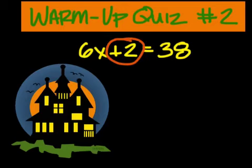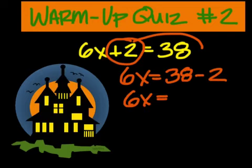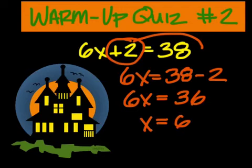Move this over to this side, change the operation to minus, and that'll give you 36 on the right. 6 times 6 is 36.